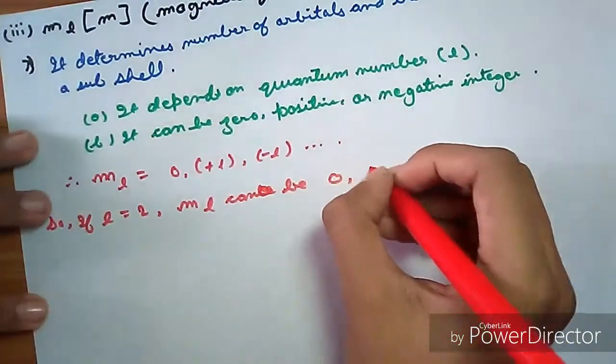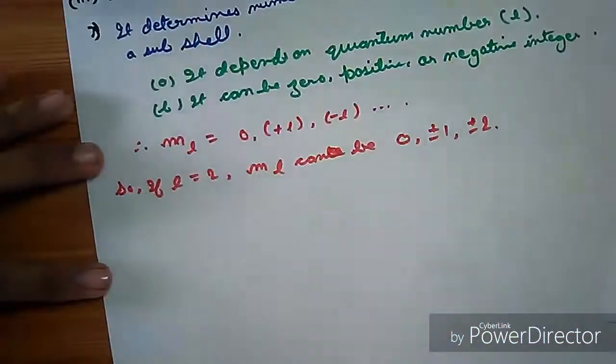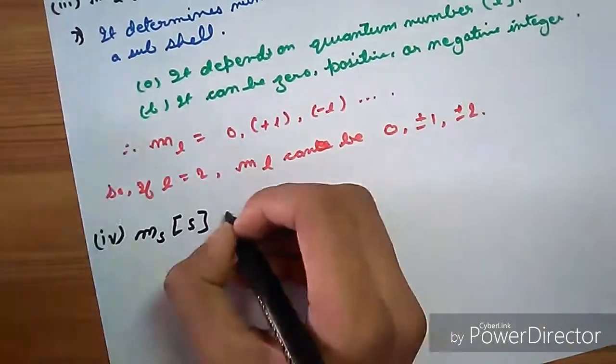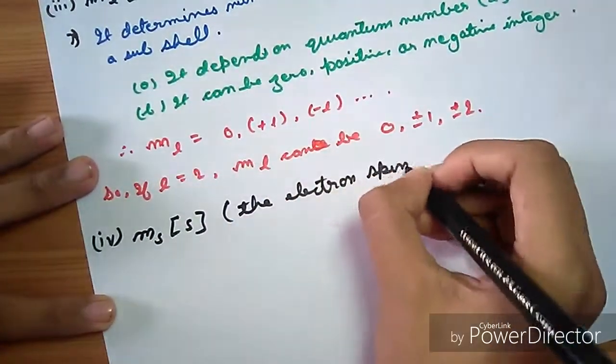If L equals 2, then ML can be 0, positive and negative 1, and positive and negative 2.